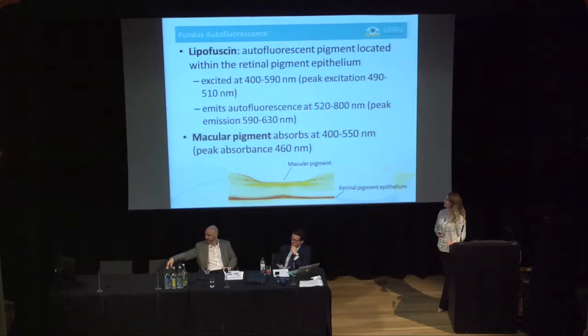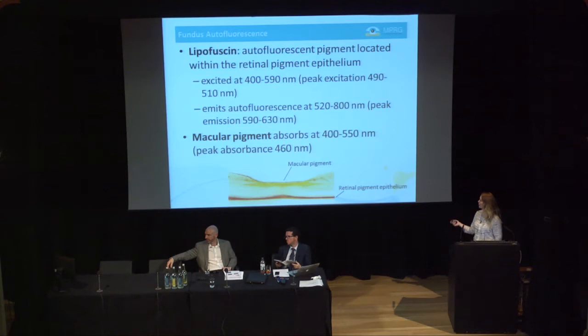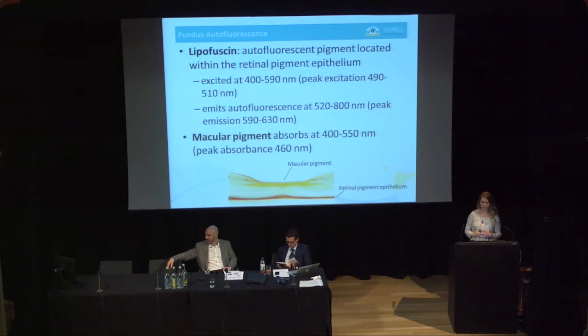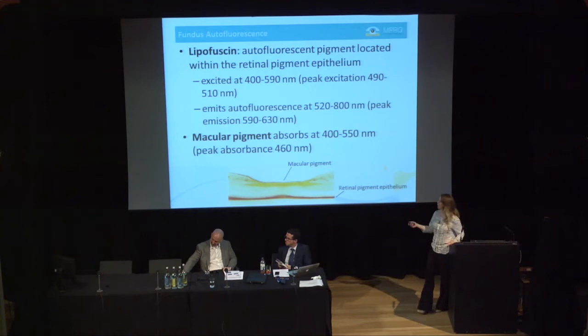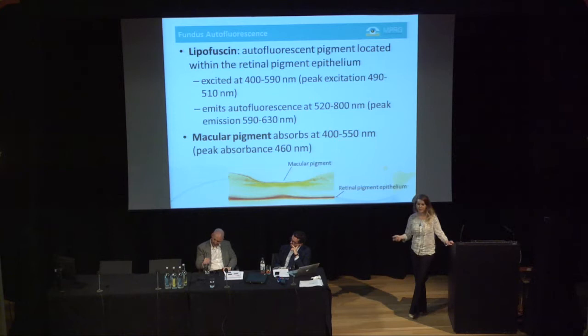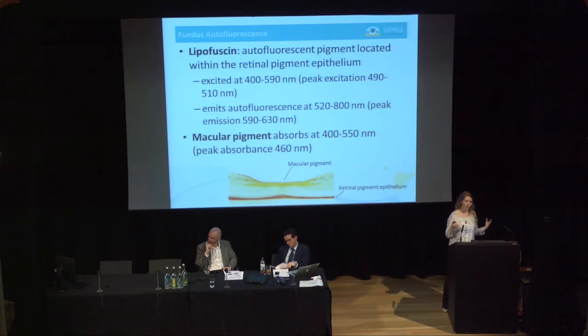Fundus autofluorescence exploits the lipofuscin in the retina. Lipofuscin is a fluorophore located in the retinal pigment epithelium, excited at a certain wavelength with peak excitation between 490 and 510 nm, emitting autofluorescence that peaks between 590 and 630 nm. Macular pigment absorbs between 400 and 550 nm with peak absorption at 460 nm. Since macular pigment is located anterior to the RPE, excitation light within that wavelength is absorbed before reaching the lipofuscin — so the emitted autofluorescence of lipofuscin is attenuated by the macular pigment.